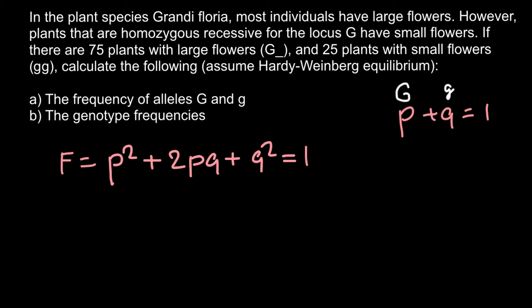The Hardy-Weinberg formula is: f = p² + 2pq + q², and all three genotype frequencies combined equal one. Here, p² stands for the homozygous dominant genotype (capital G capital G), 2pq stands for the heterozygous genotype (capital G small g), and q² stands for the homozygous recessive genotype (small g small g).